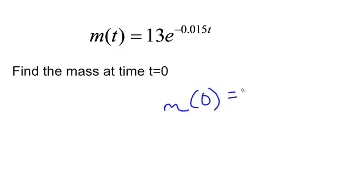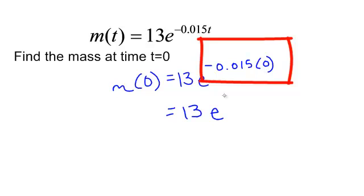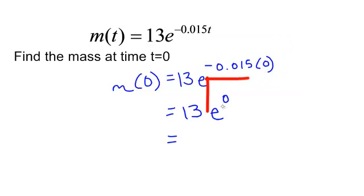That's how I know this is decaying. It has a negative exponent here, and t is 0. So m(0) = 13e^0. What is anything times 0? It's 0, and e^0 or anything to the 0, anything to the 0 power is just 1. So m(0) = 13. So the mass at the beginning was 13 kilograms.